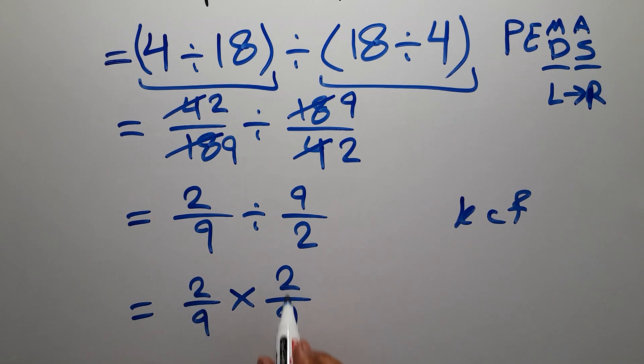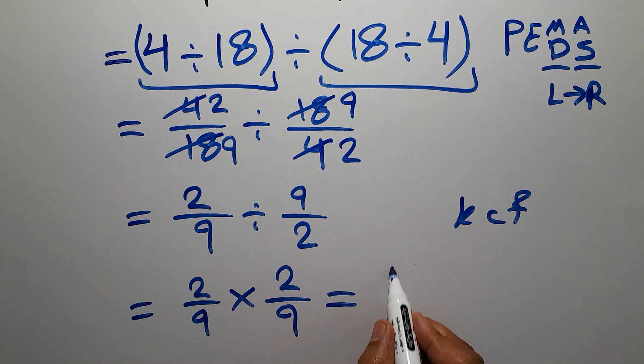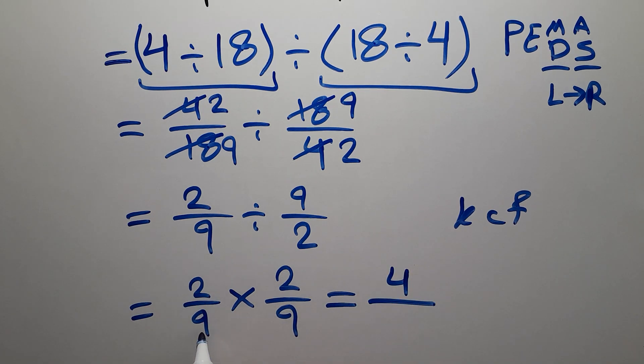So we have 2 over 9 times 2 over 9, which equals 2 times 2 gives us 4, and 9 times 9 equals 81. This is our final answer to this problem: 4 over 81.